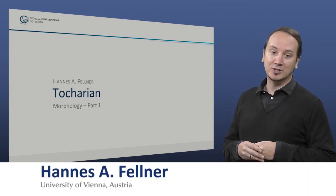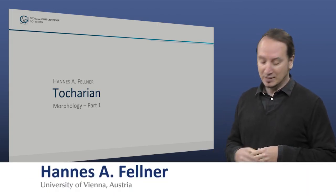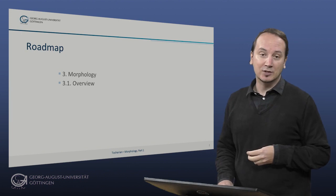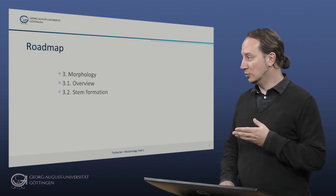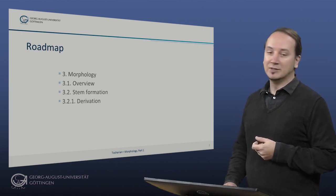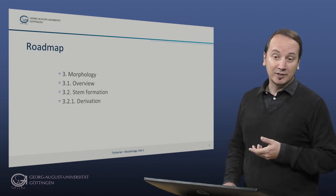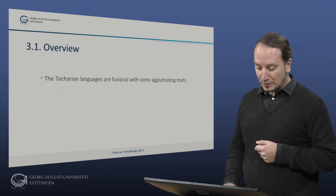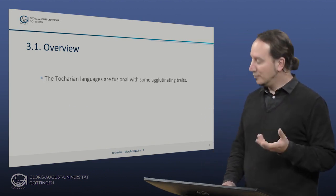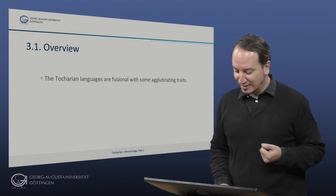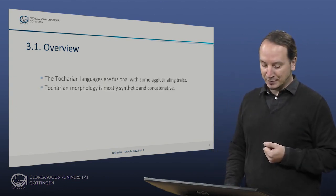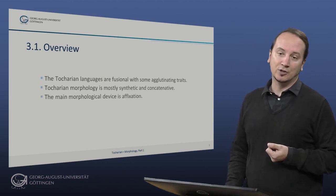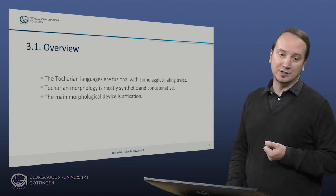Hello and welcome to a first session on Tocharian morphology. We will start with a very short overview of the morphological properties of the Tocharian languages, move on to stem formation, and here particularly focus on nominal derivation and some productive mechanisms of derivation in Tocharian. Tocharian morphology is mostly concatenative and the main morphological device found in Tocharian is affixation, though it also has some agglutinating traits.